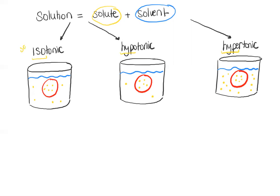The prefix 'iso' means same or equal. 'Hypo' means less than. And 'hyper' means more than. Remember that a solution is composed of a concentration of a specific solute dissolved in a concentration of a specific solvent. So isotonic solutions have equal concentrations of solutes and solvents. Hypotonic solutions contain less solutes — there is a lower concentration of solute than solvent. And finally, hypertonic solutions contain more solutes than solvents, or a higher concentration of solute than solvent.